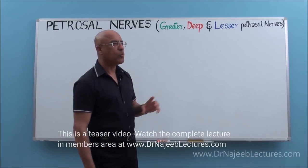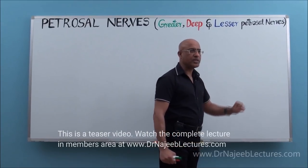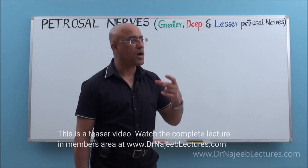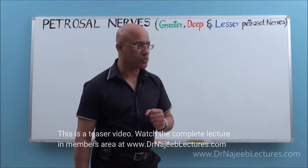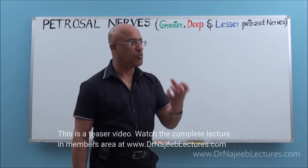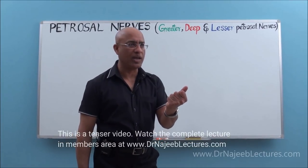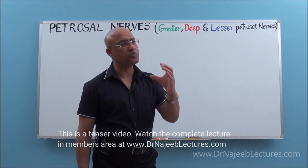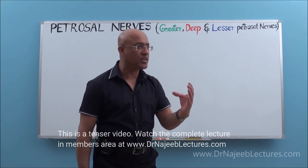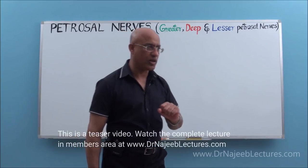First of all, why are these nerves called petrosal nerves? The reason is that these nerves pass through a bone called the petrous part of the temporal bone. The petrous part of the temporal bone is very hard — stone-like. Within it there are middle ear structures, inner ear structures, and some nerves including the petrosal nerves.